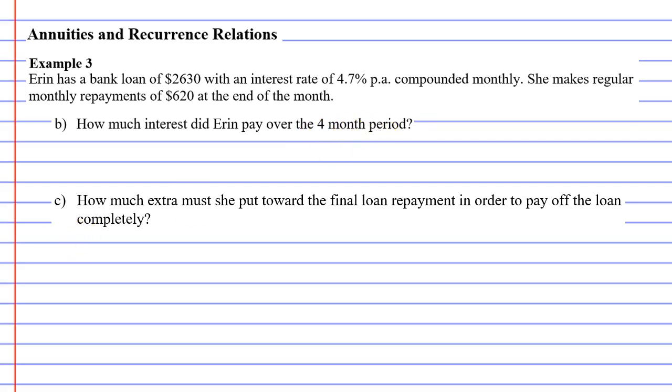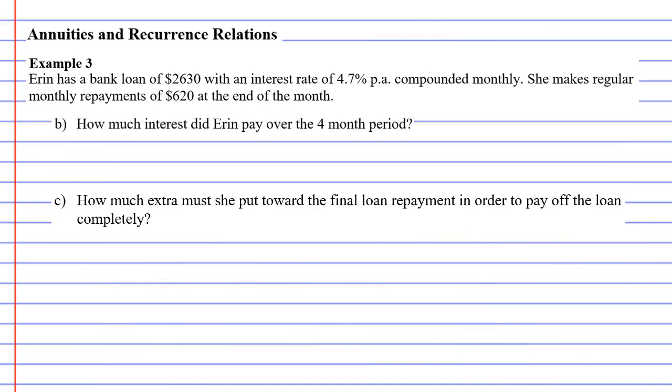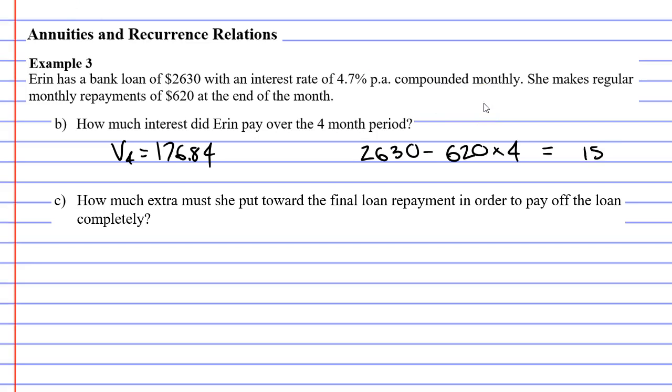So what I'm going to do is look at what V_4 is. We're going to look at what the loan reduced to at the end of the fourth month. It reduced to $176.84. V_4 equals $176.84. And I want you to think to yourself, what would happen if the bank did not charge me interest? So Erin had a loan of $2,630. That's how much she owed the bank at the start. And each time she made a payment, her loan would reduce by this payment. And she did it four times. So we'll times this by four. Let's make this calculation now.